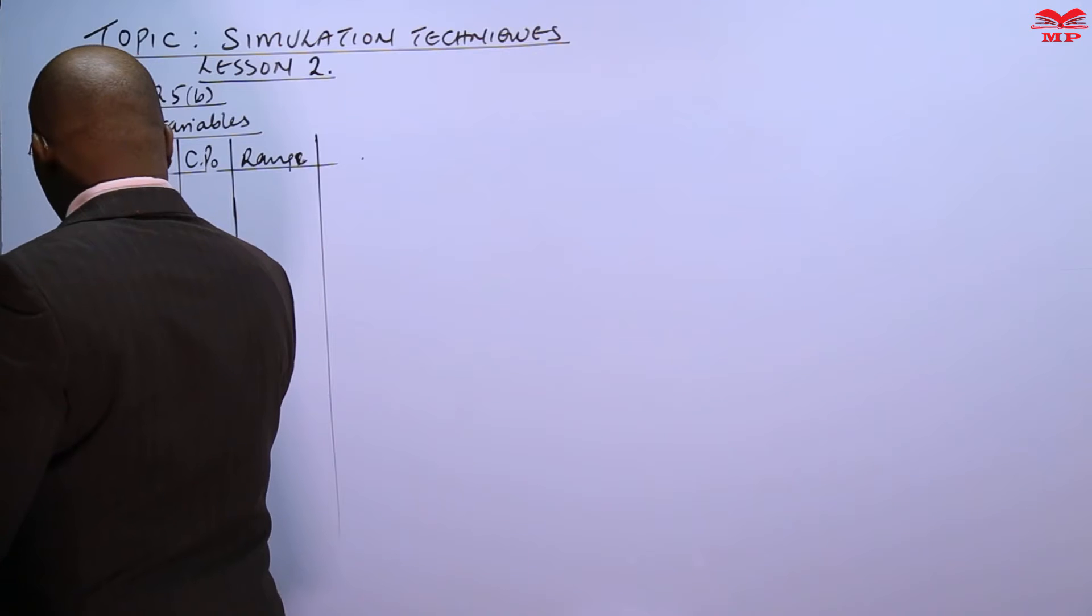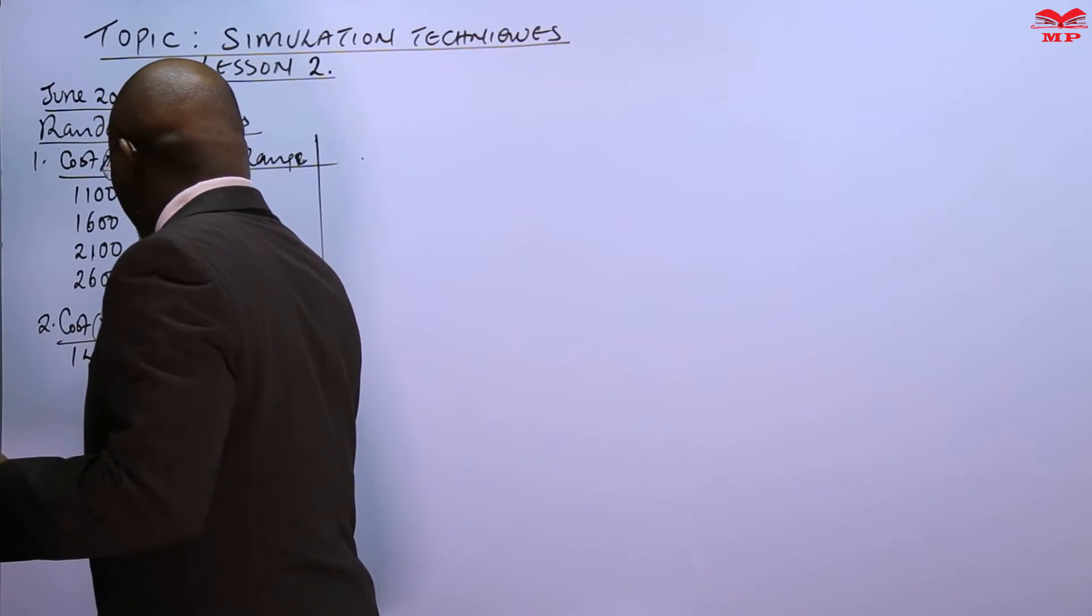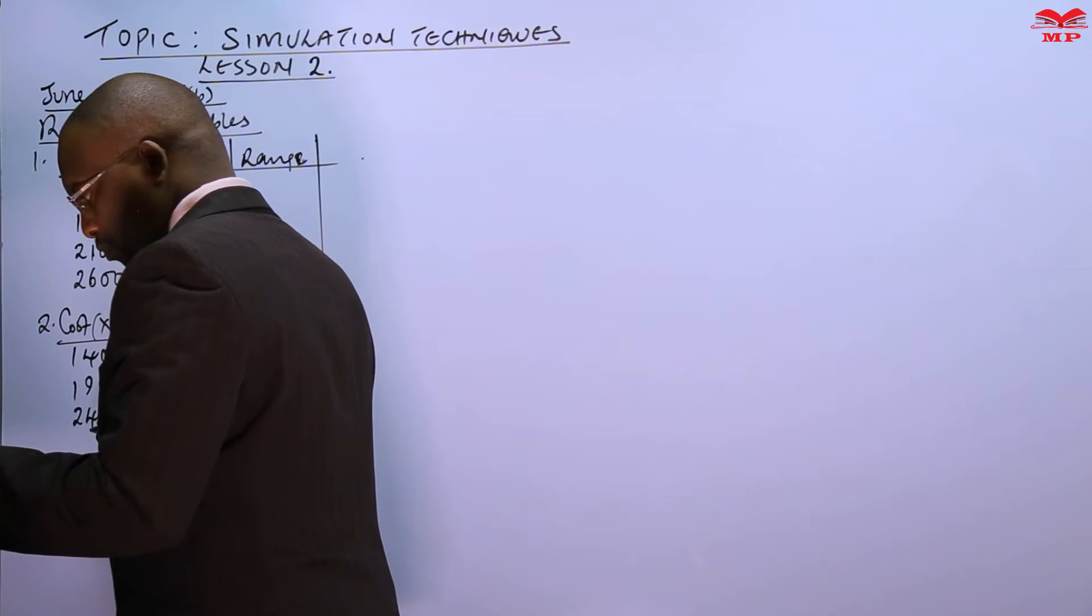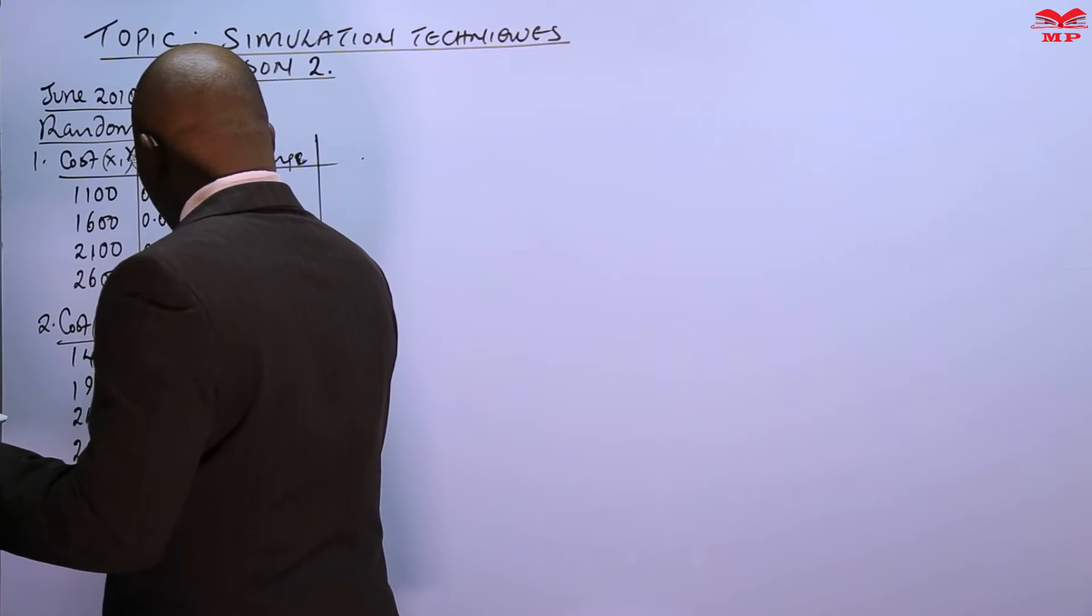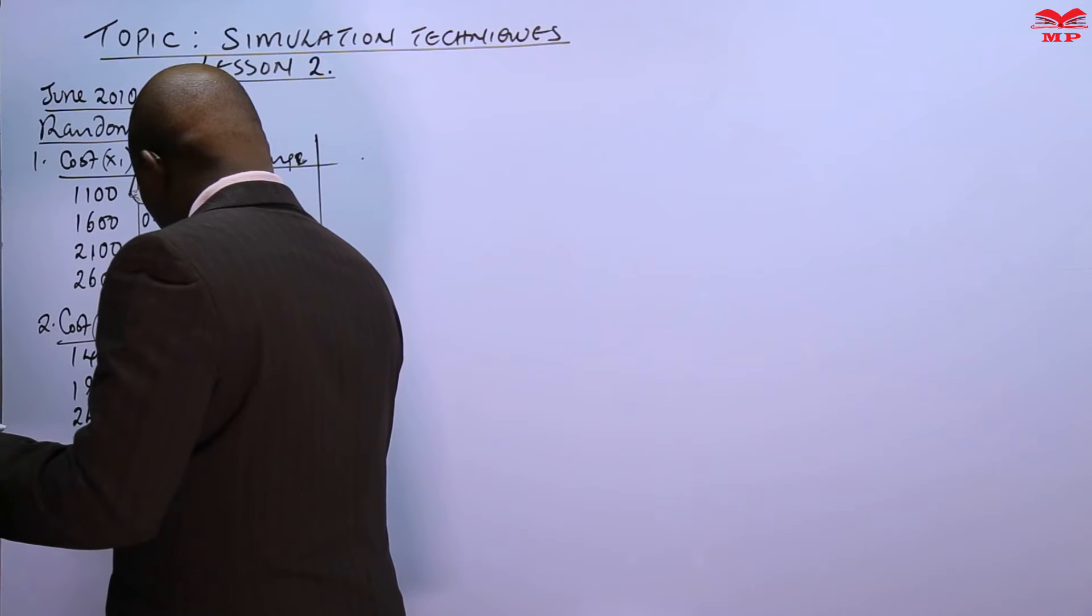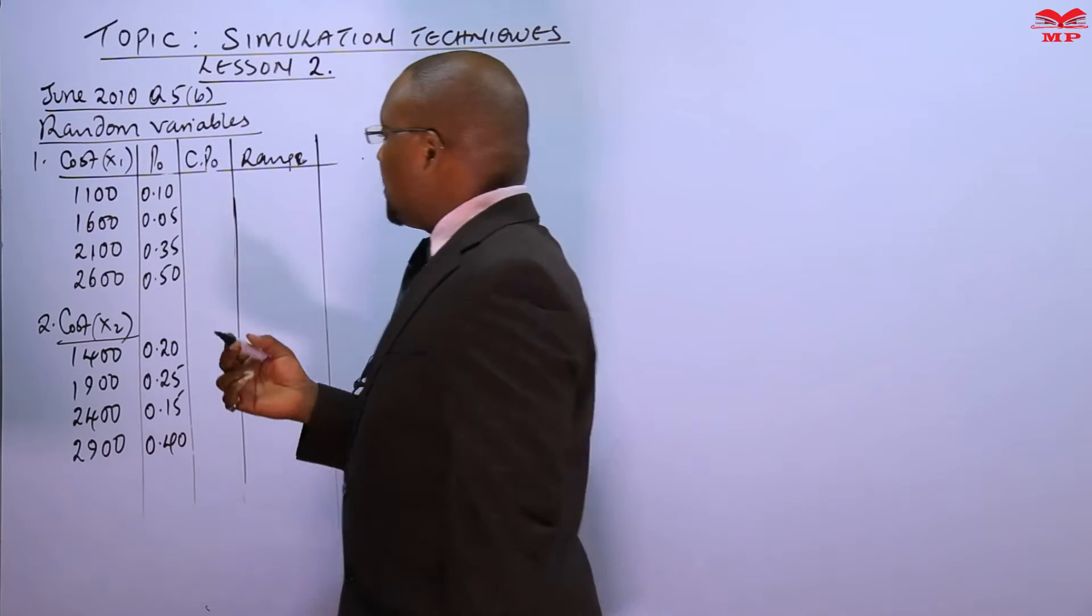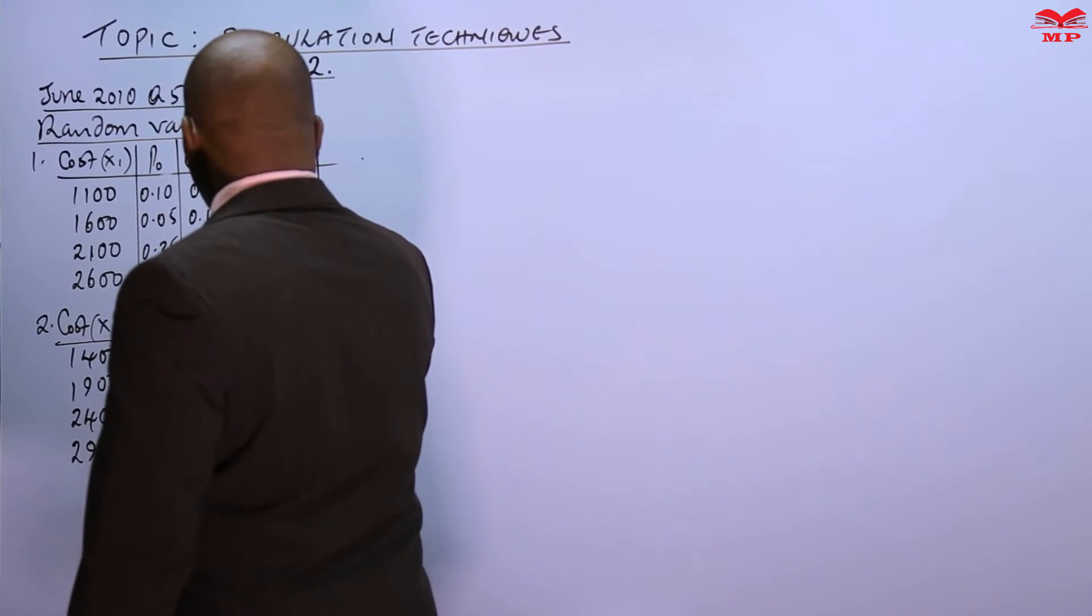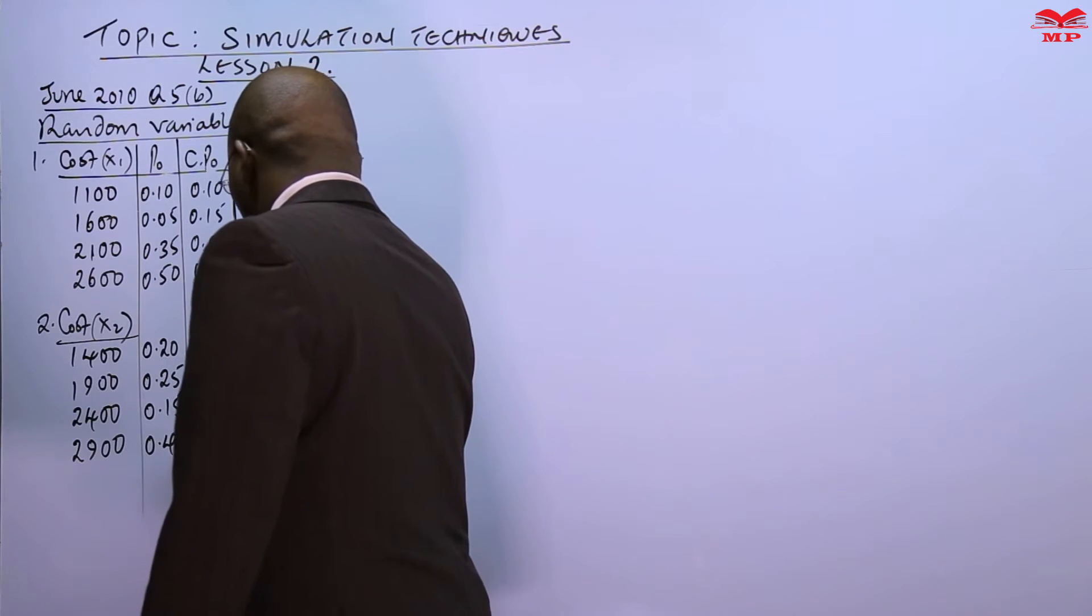Then the second one is cost of X2, which is 1400, 1900, 2400, 2900, with a probability of 0.20, 0.25, 0.15, 0.40. So now we can get the cumulative. That's step one. Step two is the cumulative which is going to be 0.10, 0.15, 0.50, 1.00. This is 0.20, 0.45, 0.60, and 1.00.